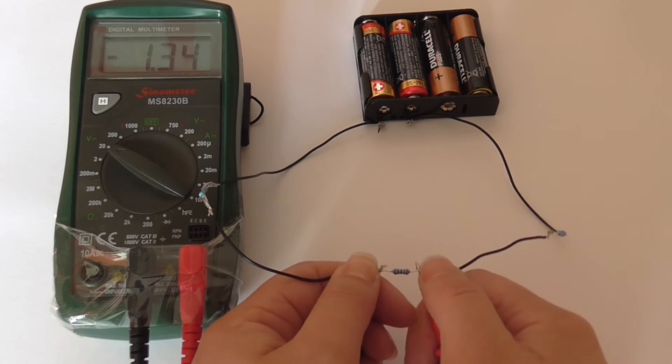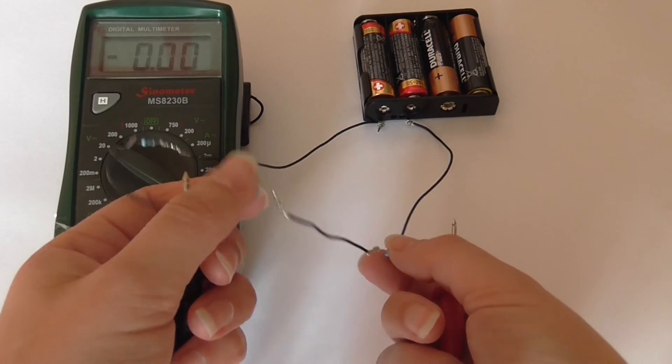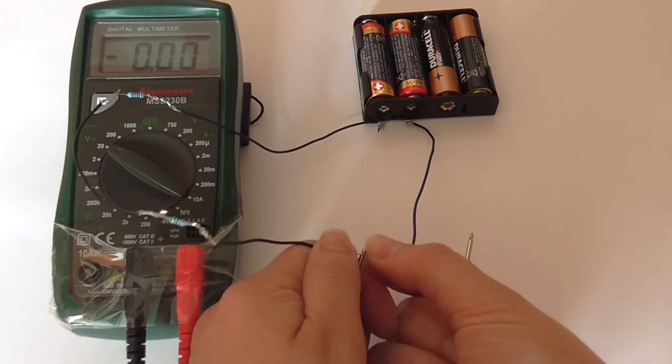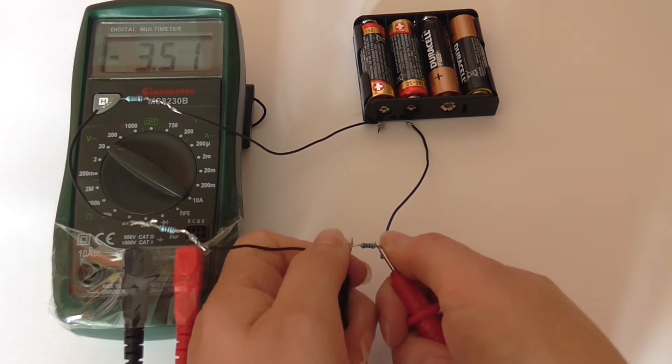The 2.2kohm resistor has a potential difference of 1.64 volts across it. The 4.7kohm resistor has a potential difference of 3.51 volts across it.